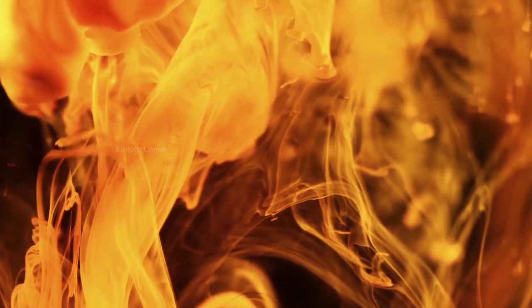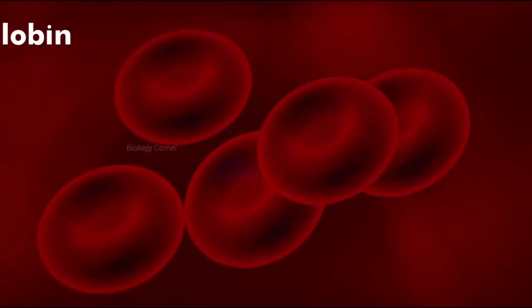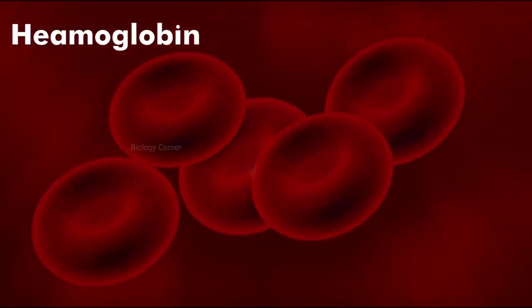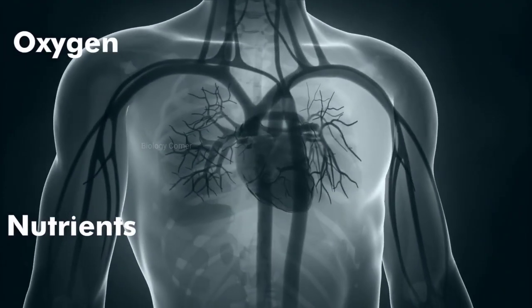Plasma is the liquid portion of our blood which is yellow in color while the red color of blood is due to the hemoglobin present in its red blood cells. The main function of blood is to transport oxygen and nutrients to every part of our body.